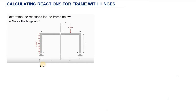So, AY is acting upward and AS is acting to the right. Therefore, the pin support at point A will have AY acting upward and AS acting to the right. Now, as you can see, we are having a distributed load of 6 kip per foot.